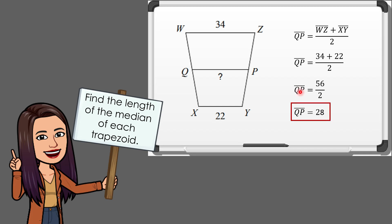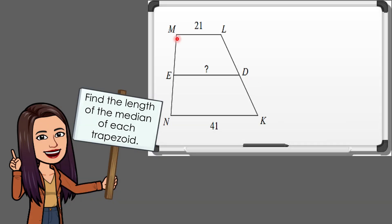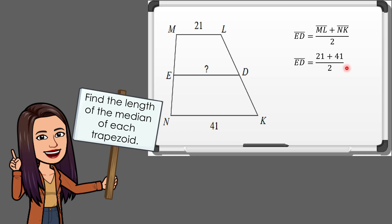That is the measure of the median QP. Let us have example number 2. We have trapezoid MLKN. The value of the median ET is equal to one-half the sum of bases ML and NK. Substituting the values, we have 21 plus 41 divided by 2. Therefore, the median ET equals 62 divided by 2, which is equal to 31. That is the measure of the median ET.